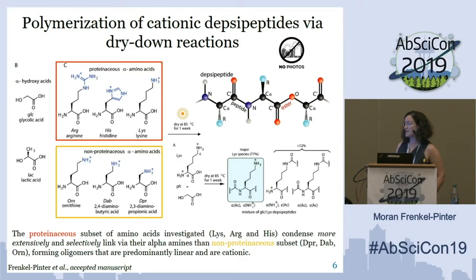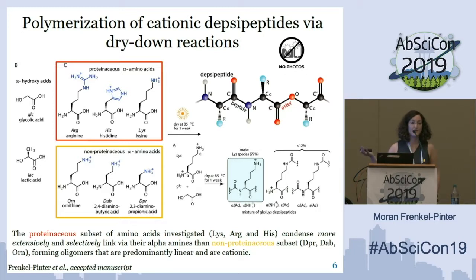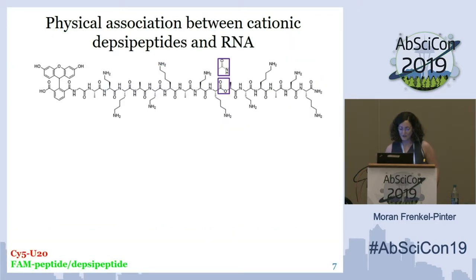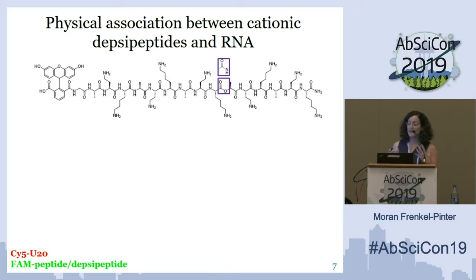To summarize, we found something very interesting: the proteinaceous amino acids condense more extensively and selectively through their alpha amine compared to the non-proteinaceous amino acids. We think we now understand the chemical basis for selection of today's cationic amino acids over the non-proteinaceous amino acids that were also present in the prebiotic soup. So yes, we can form cationic depsipeptides — but what can we do with them? Can they take part in a mutualistic manner with RNA?